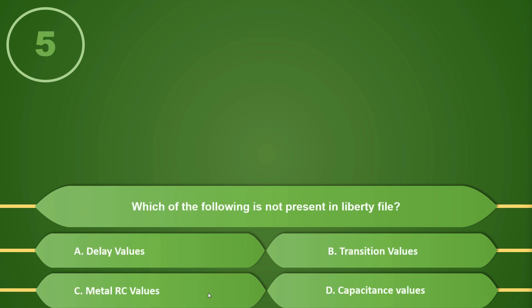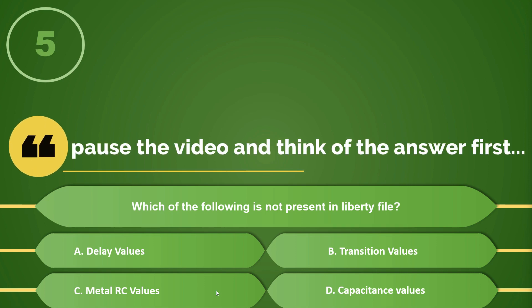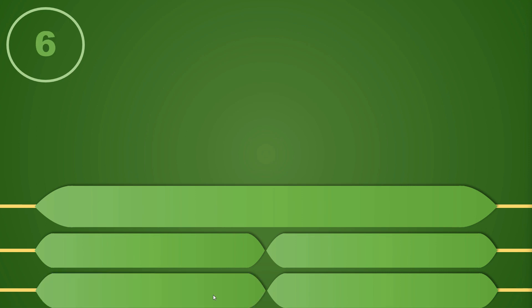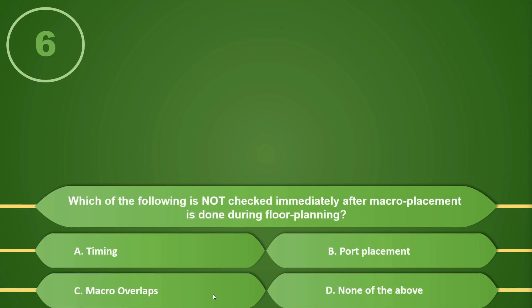The next question is: Which of the following is not present in the liberty file? Options: A) Delay values, B) Transition values, C) Metal RC values, or D) Capacitance values. If your answer is C, metal RC values, then you are correct. Metal RC values are used in SPF generation and are not part of the liberty file.